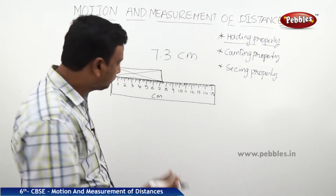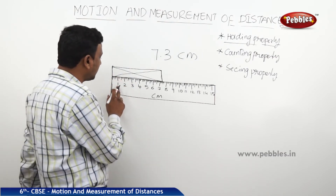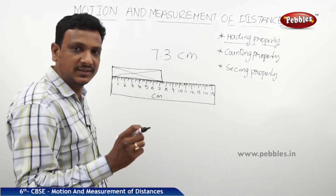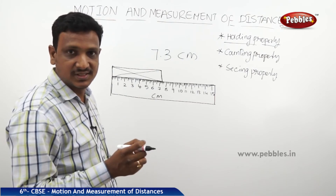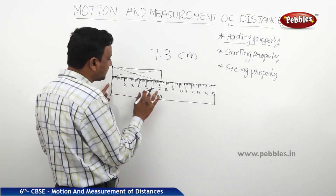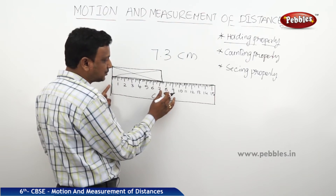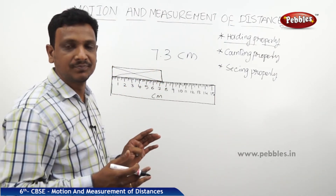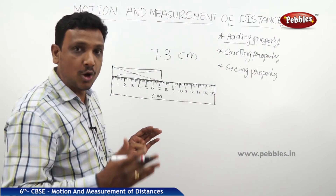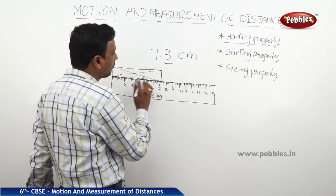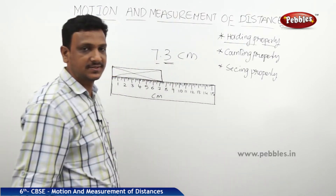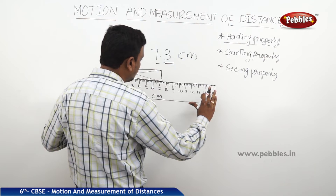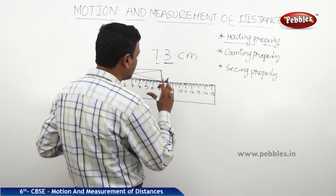The bigger markings on the scale show centimeters — from here to here is one centimeter. In between each centimeter, there are ten smaller divisions representing millimeters. If the end of the box is past seven but hasn't reached eight, you cannot say it is eight centimeters. You count how many small divisions past seven you've crossed — in this case three — giving you 7.3 centimeters. Always keep the scale straight, never tilted.